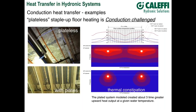We modeled this with finite element analysis software. The graphics show different regions from red through various shades out to blue, representing bands of temperature. It's very obvious that the plate — even though it's a thin plate on the order of 20 thousandths of an inch — aluminum has a high thermal conductivity, so it acts like a wick. It diffuses heat out away from the tubes and spreads it across the floor, which is very important for achieving a consistent floor surface temperature.